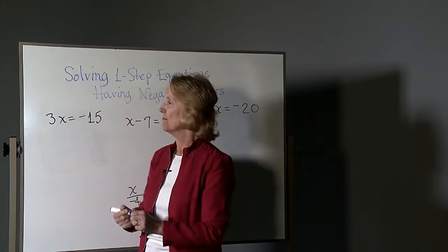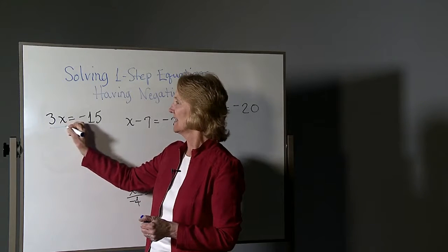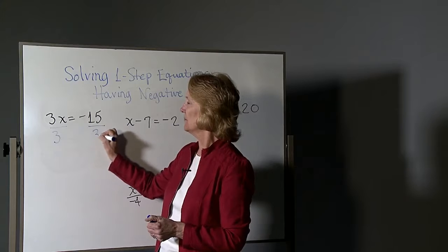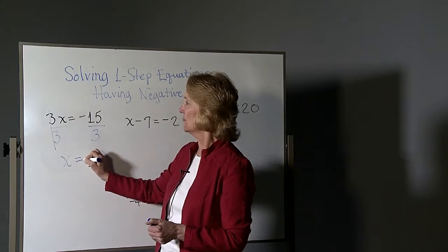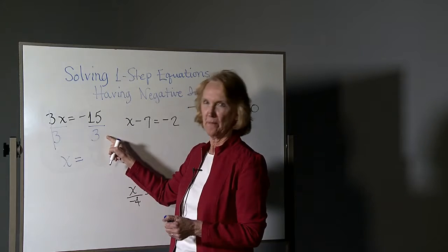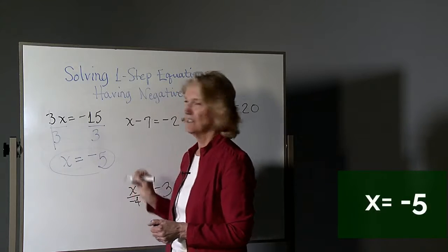We do the opposite operation. Here it has three times x equals negative fifteen. So we'll divide to undo the multiplying. These cancel. We get x equals negative divided by positive is negative. Fifteen divided by three is five. Done.